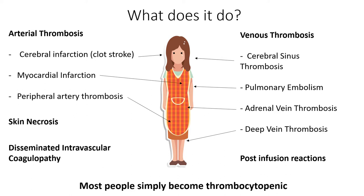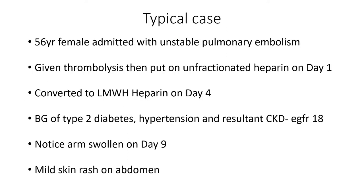However, bear in mind that most people with HIT simply become thrombocytopenic. So a typical case: a 56-year-old female admitted with an unstable PE. She was thrombolysed on admission and then put on unfractionated heparin on day one, converted over to treatment-dose low molecular weight heparin on day four. Background of diabetes, hypertension, and chronic renal failure with an eGFR of 18 — and we'll say that's her baseline.